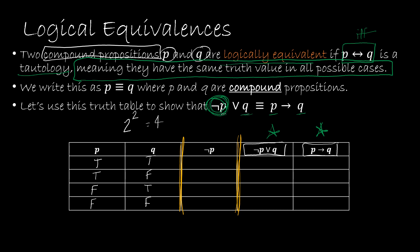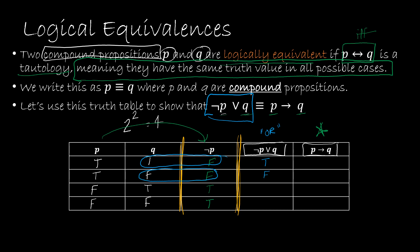NOT P takes whatever is in the P column and negates it: true becomes false, true becomes false, false becomes true, false becomes true. Now for the third part — the important part — we find the truth value of NOT P OR Q. For OR, one or the other needs to have a true. NOT P and Q: there's a true there, so it's true. False and false gives false. True and true gives true. False and true gives true.